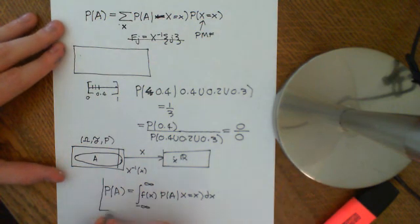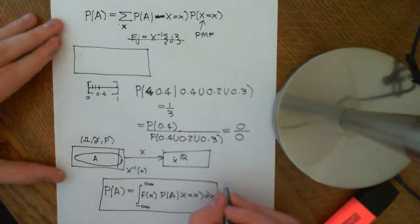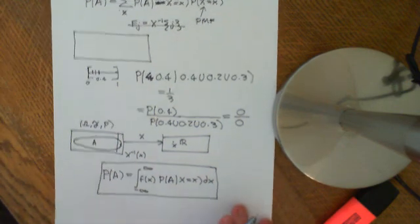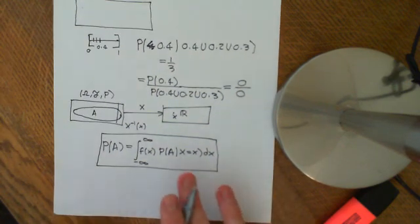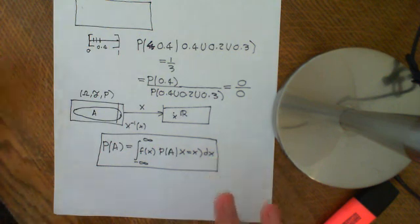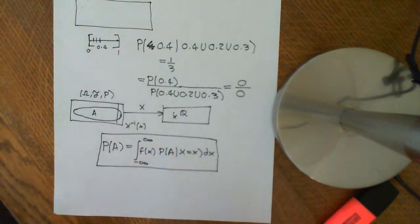And that is the law of total probability that we will need in the next video. And I understand if you feel annoyed at me now, because I haven't really justified this. And the reason is that you do need a lot of measure theory to make these statements properly precise.